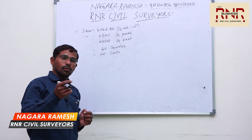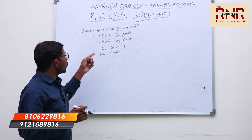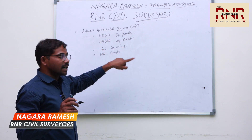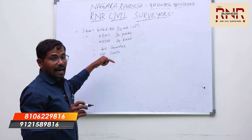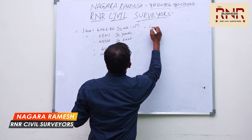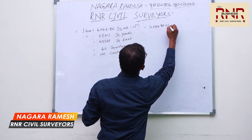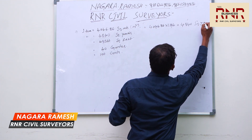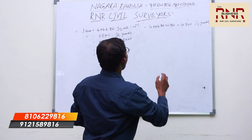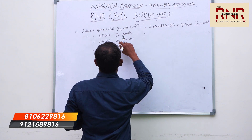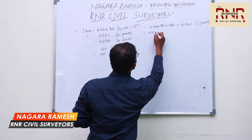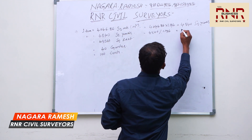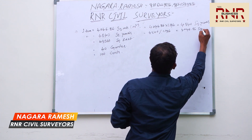To verify: 4046.86 square meters multiplied by 1.196 equals 4840 square yards. Conversely, 4840 square yards divided by 1.196 gives back 4046.86 square meters.